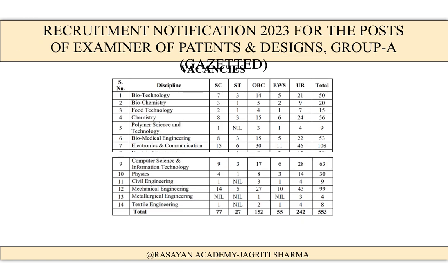Now, how many vacancies are provided by the government across different categories? For Biotechnology there are 50 vacancies, for Biochemistry 20, for Food Technology 15, for Chemistry 56 — of which SC: 8, ST: 3, OBC: 15, EWS: 6, and Unreserved: 24. The total number of vacancies for the Patent and Designs Officer post is 553.